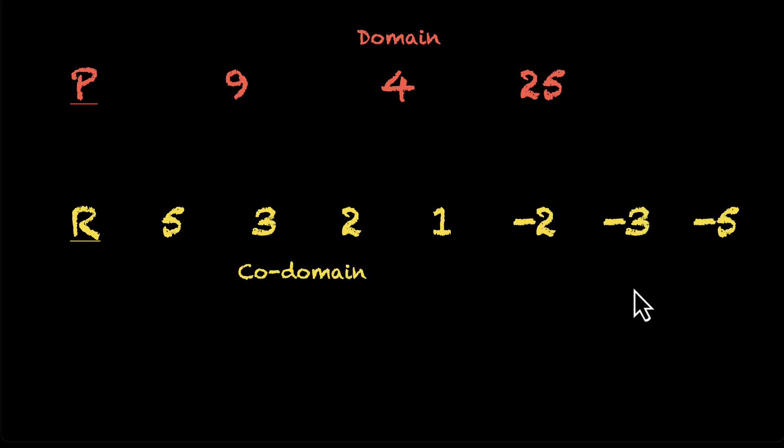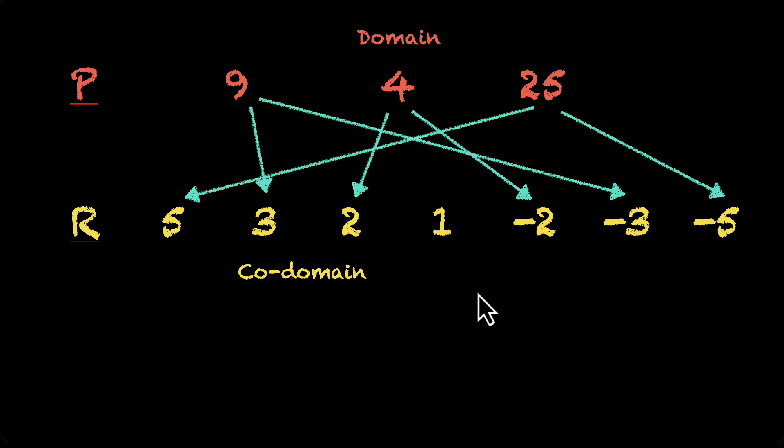How do we find the range? Let's look at the relation. 9 is with 3 and minus 3, 2 and minus 2. 25 is with 5 and minus 5. What's left? 1 is left. So other than 1, everything else is part of the relation, which means 5, 3, 2, minus 2, minus 3, minus 5. They together form the range of this relation.